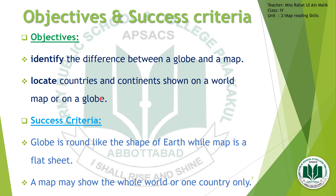How would we successfully achieve these objectives? If we remember that a globe is round like the shape of Earth, while a map is a flat sheet. So the very first difference is globe is round while the map is a flat sheet. There is another thing to remember about a map — that it may show the whole world or one country only, depending upon the nature of the map.